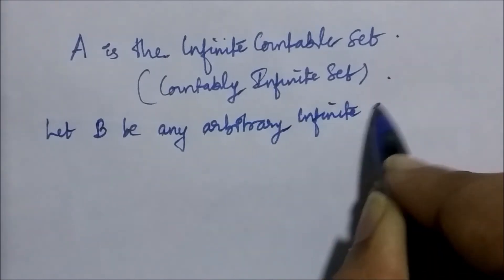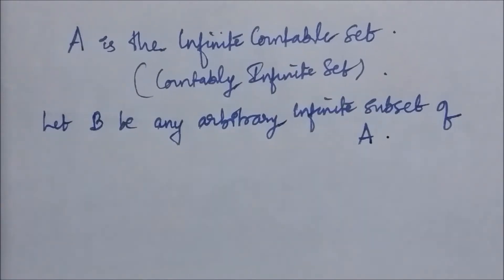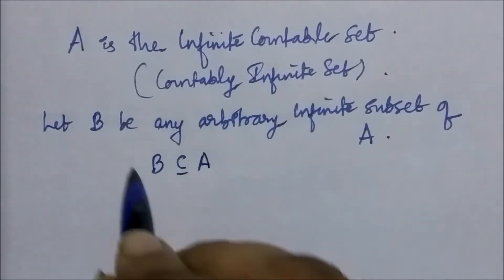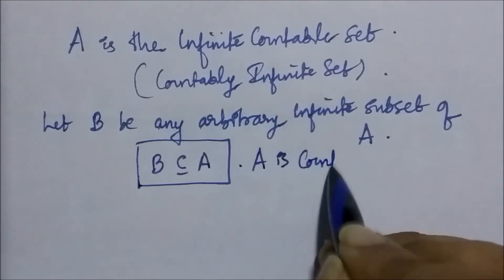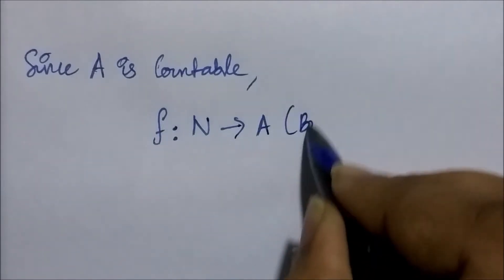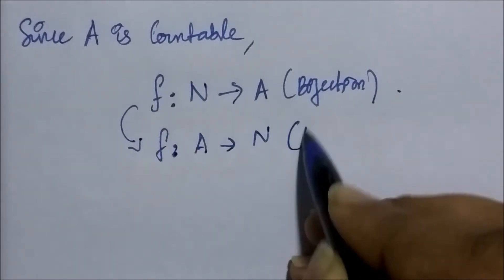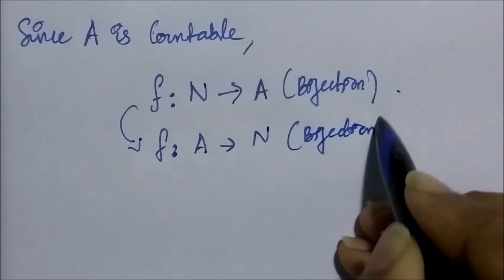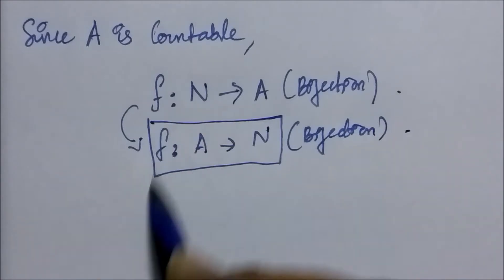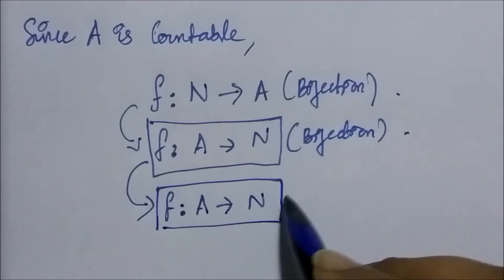Let B be any arbitrary infinite subset of the set A. So B is a subset of A and A is countable. Since A is countable, there exists a bijection function f from the set of natural numbers to set A. Now f from ℕ to A is a bijection means that f from A to ℕ is also a bijection, which means f from A to ℕ is also an injection.